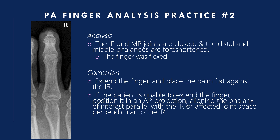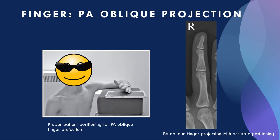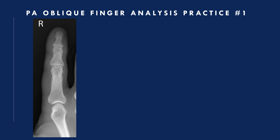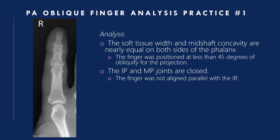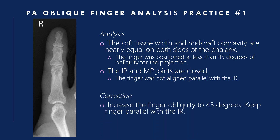PA oblique projection of the finger: here is an example of how to position for this oblique projection and an accurate positioning x-ray. Analysis practice one: the soft tissue width and mid-shaft concavity are nearly equal on both sides of the phalanx — the finger was positioned at less than 45 degrees of obliquity, and the IP and MP joints are closed because the finger was not aligned parallel with the IR. Correction: increase the finger obliquity to 45 degrees and keep the finger parallel with the IR.